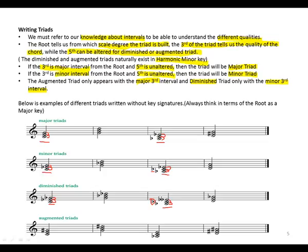In A-flat major we have E-flat, which would be perfect, but in this case the E-flat has been altered a half step below, making it a diminished fifth — and thus a diminished triad.